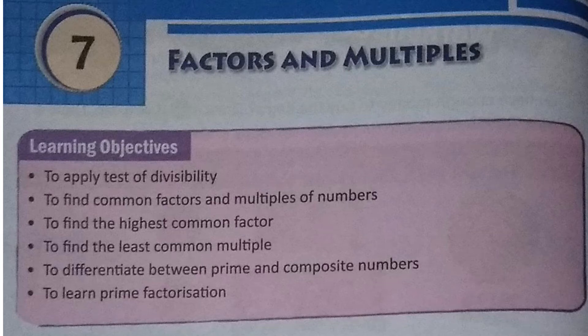Hello everyone, welcome back to the YouTube classes. This time we will use the AD Puzzle platform, so you will get a few questions during the video that you have to attempt. Today is a new chapter: Factors and Multiples. A factor is a number which divides a number completely. When two factors multiply, they give a product. Multiples means the table of the number.